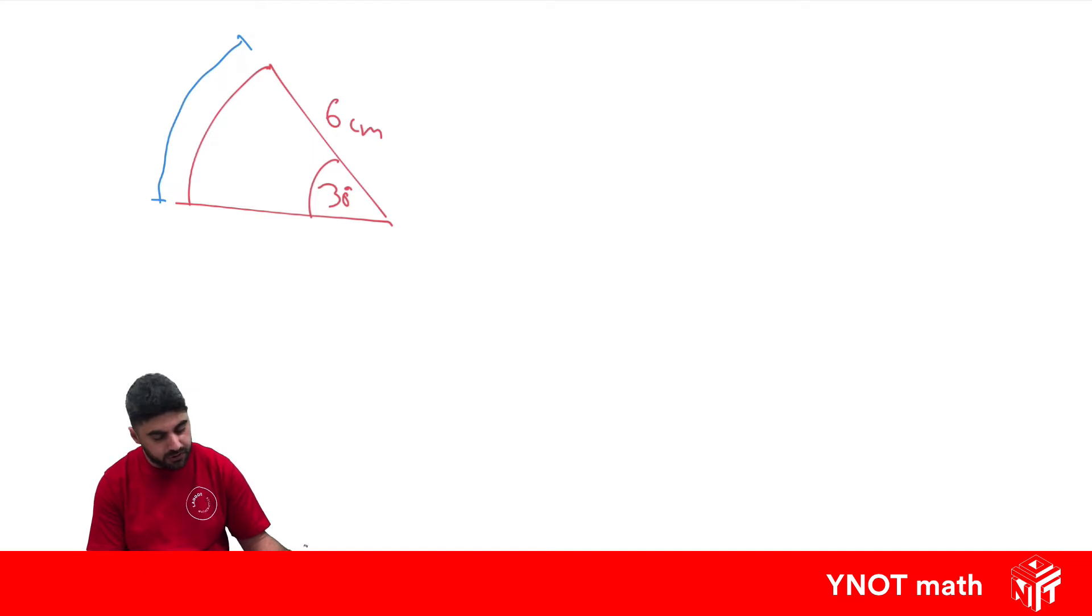And there's a formula we can use to find the arc length. That's going to be the angle at the centre divided by 360 degrees, or if you know the fraction of the circle that you have, you could replace that with the fraction of the circle.